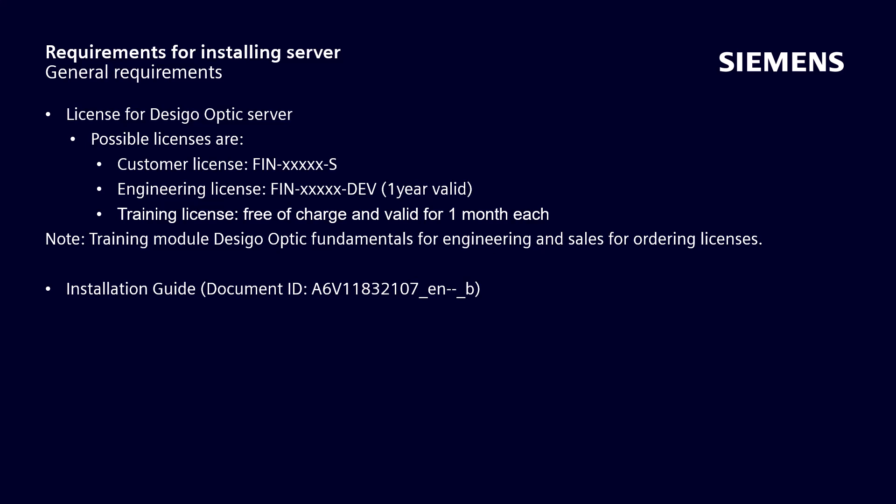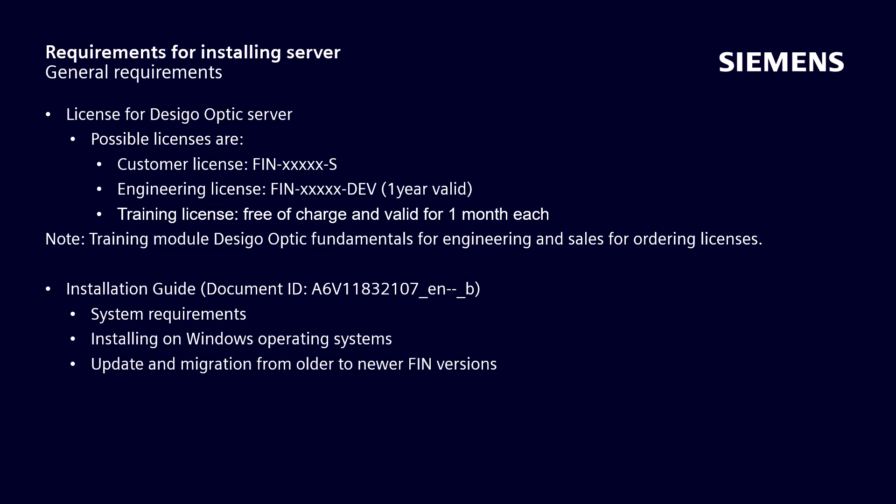It also explains the following procedures: the requirements for all systems and about the alternative possibility to use the Open Java Development Kit; how to install Decego Optic for Windows operating systems; how to update Decego Optic and how to migrate project and database from older to newer FIN versions; and further helpful information.